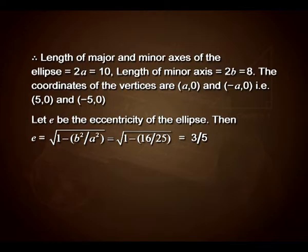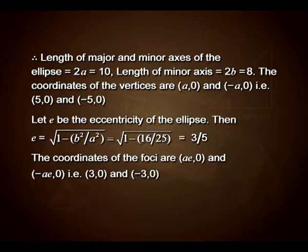That gives us 3/5. The coordinates of the foci are (ae, 0) and (−ae, 0), that is (3, 0) and (−3, 0).